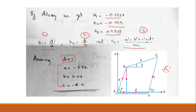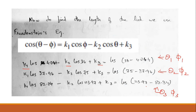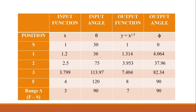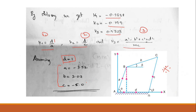A verification check can be performed using the table: the intermediate x values should lie between 1 and 4, intermediate input angles between 30° and 120°, output function values between 1 and 8, and output angles between 0° and 90°. All conditions are satisfied. This completes the synthesis of the 4-bar mechanism for the given function generation problem. Thank you.